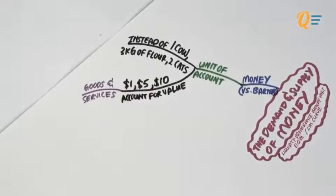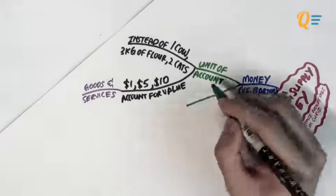If you go to a supermarket, I'm sure you want to see price tags with money values rather than something like: this pack of flour is going to cost you a quarter of a cow.